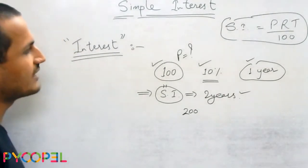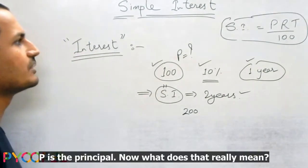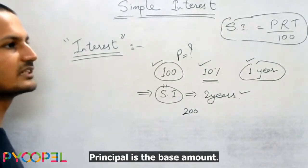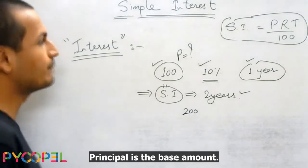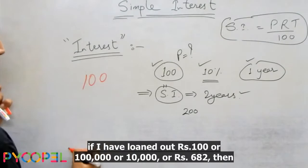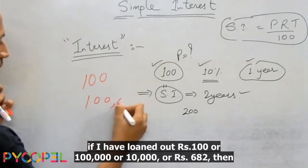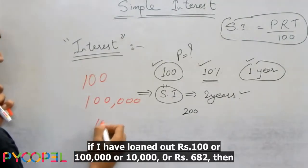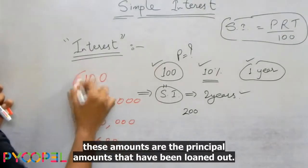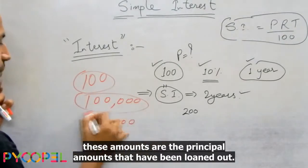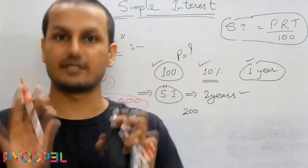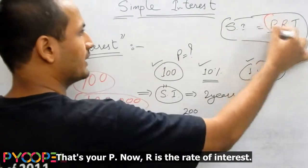P is the principal — it is the base amount. For example, if I have loaned out 100 rupees, 1 lakh rupees, 10,000 rupees, or 682 rupees, these amounts are the principal amounts that have been loaned out. This is called the principal. That's your P.